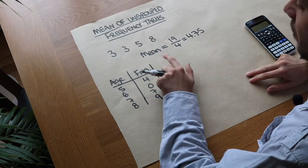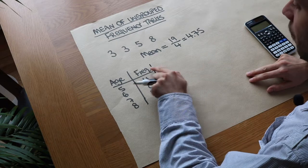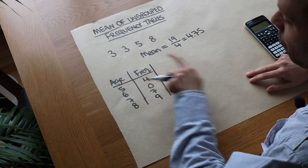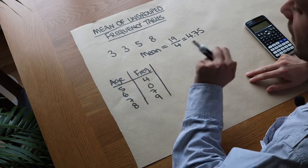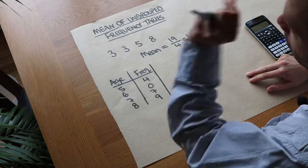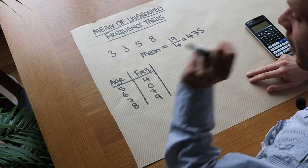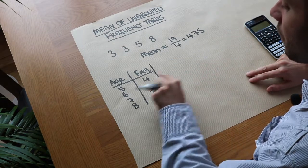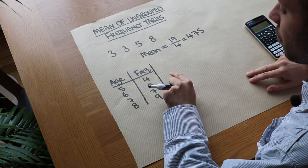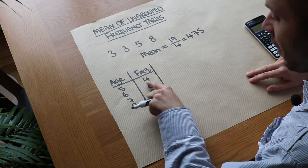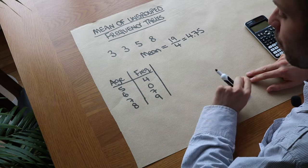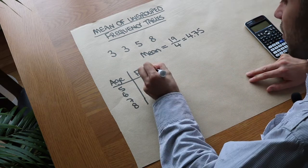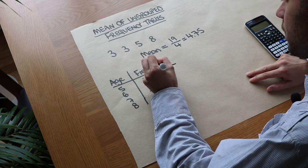Now we need to do exactly the same thing — we need to work out the total of all the ages, so add up all the ages and then divide by how many people there were. To find the total age, we can find the total age within each group, so let's add a total row.